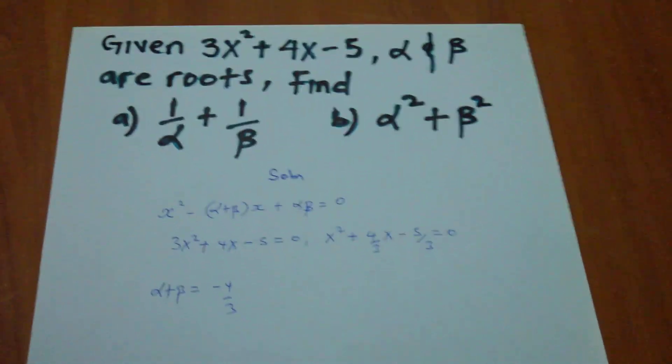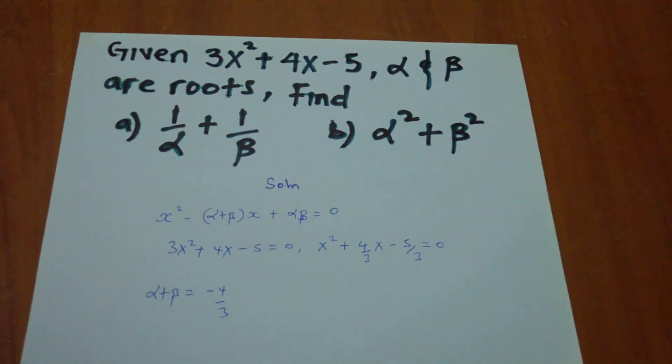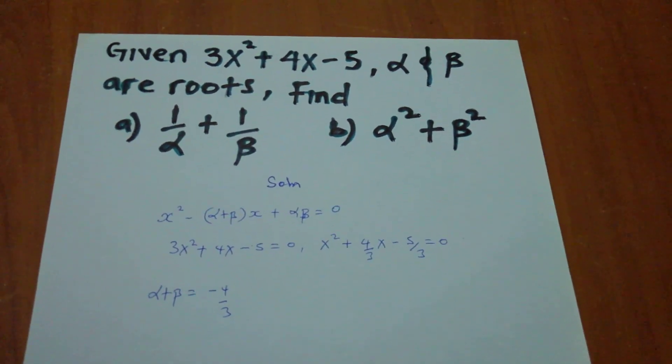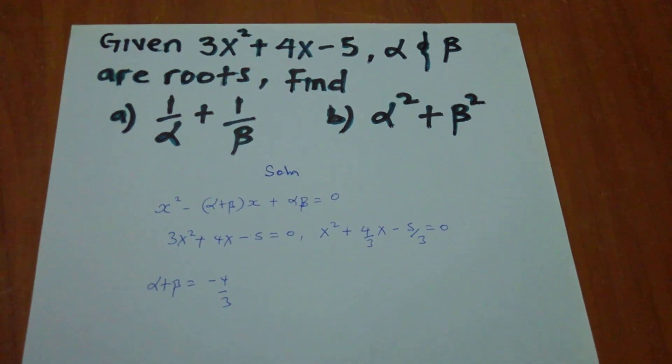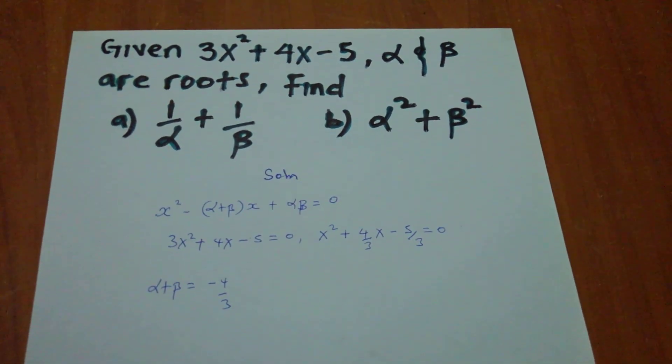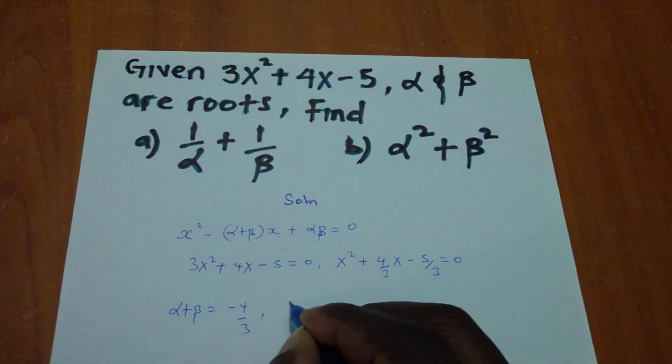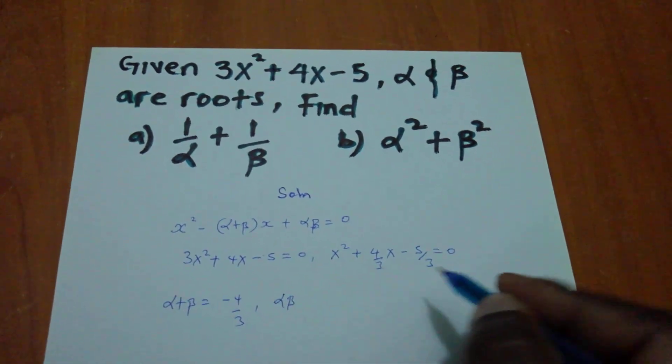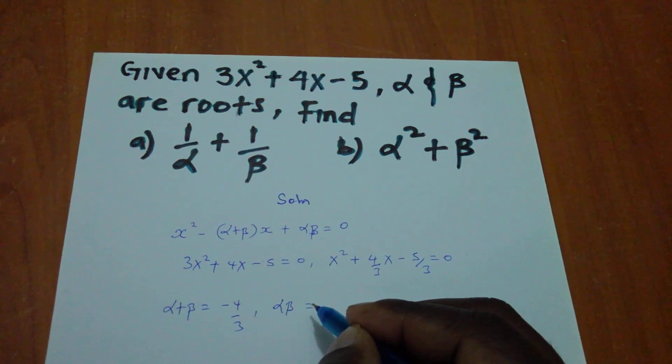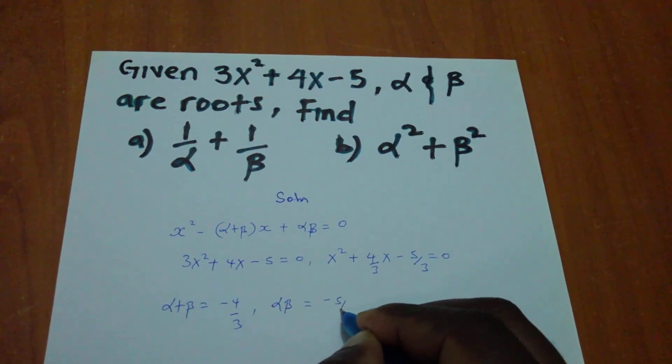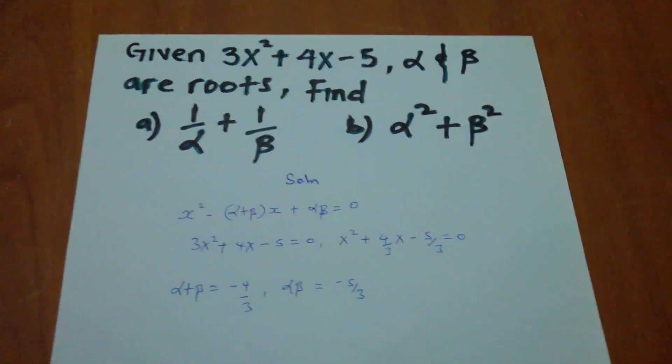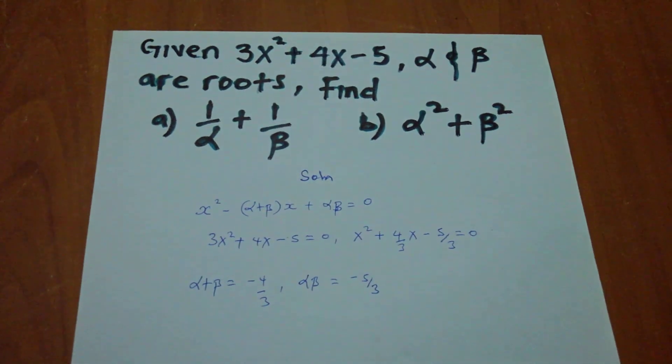I hope you agree. If you don't agree and you don't understand, you can go on the previous video I had made for roots of quadratic equations. And therefore, also, my αβ, which is the product, it will be -5/3. I hope we are okay up to this point.